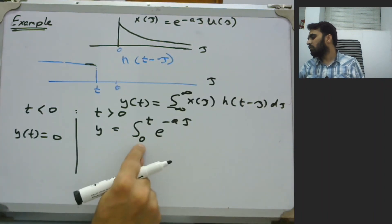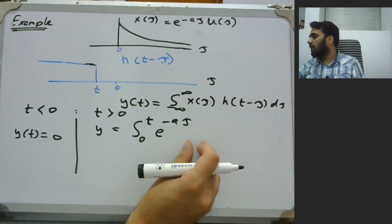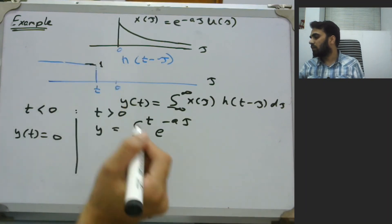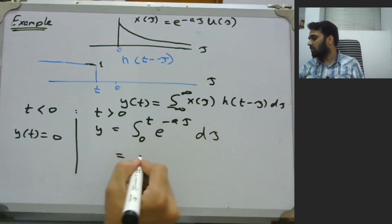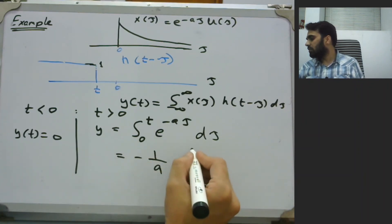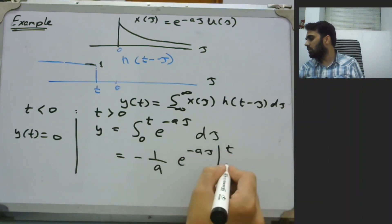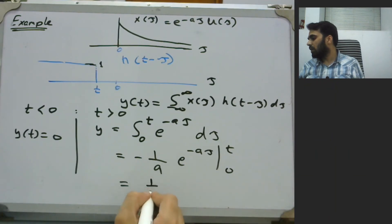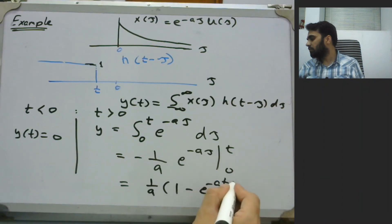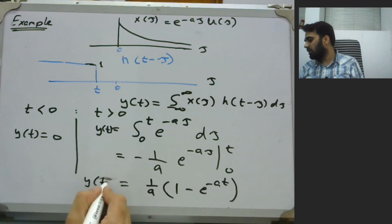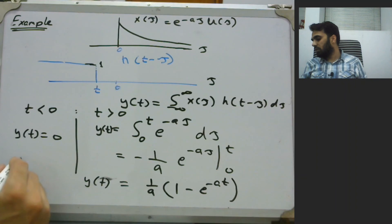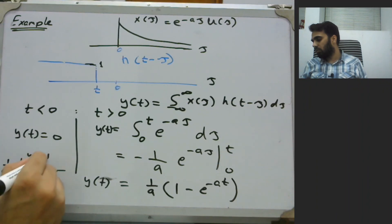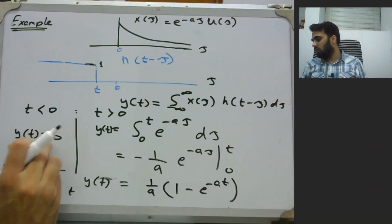Since X of TAU is e^(-a TAU) U of TAU and we are already integrating from zero onwards, we don't need to write U of TAU. And H of T minus TAU just has a value of one. So we are left with the integral from zero to T of e^(-a TAU) d TAU, which evaluates to minus one over a times e^(-a TAU) evaluated from 0 to T, giving us (1/a)(1 minus e^(-aT)). This is our final output Y of T for the integrator circuit when the input is e^(-aT) U of T. The output saturates at 1/a, with anything less than zero equal to zero and anything greater than zero following this expression.